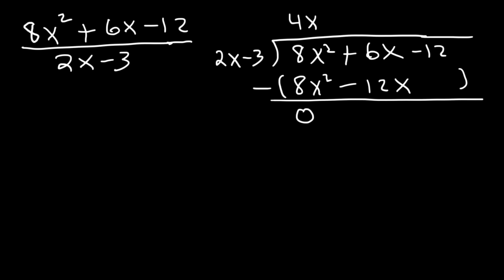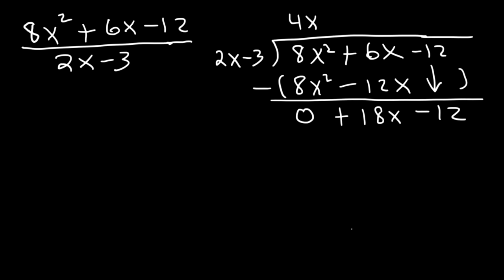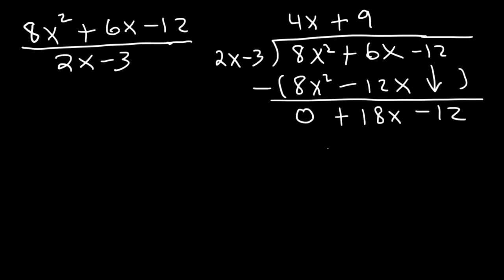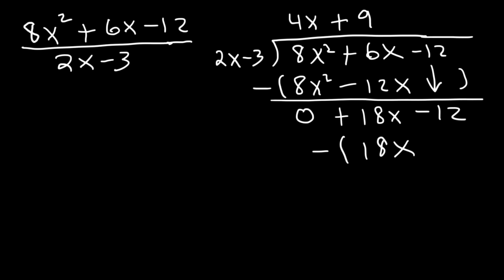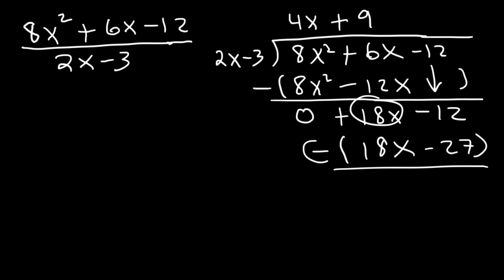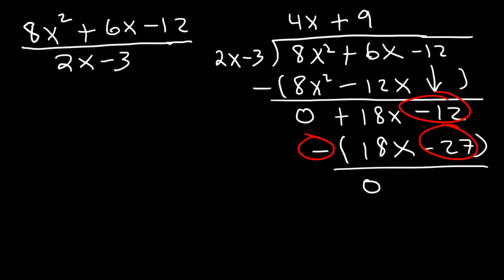8x squared minus 8x squared is 0. 6x minus negative 12x is the same as 6x plus 12x, which is positive 18x. Bring down the negative 12. Now divide: 18x divided by 2x is 9. Multiply: 9 times 2x is 18x, and 9 times negative 3 is negative 27. Subtract: 18x minus 18x is 0. Negative 12 minus negative 27 is the same as negative 12 plus 27, which is positive 15 — and that is the remainder.